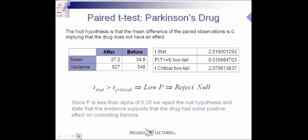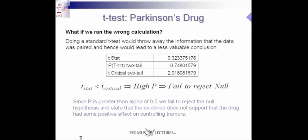Let's look at the results of the paired t-test. When you run the calculation, you end up with a t-stat of 2.51, and the t-critical is 2.08. So t-stat is greater than t-critical, and we end up with a low p-value below 0.05, which means we reject the null hypothesis. The null hypothesis was that the drug had no effect. Since we reject that null hypothesis, we believe that the drug possibly had some positive effect on controlling tremors.